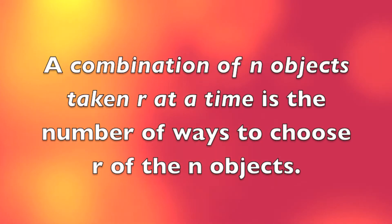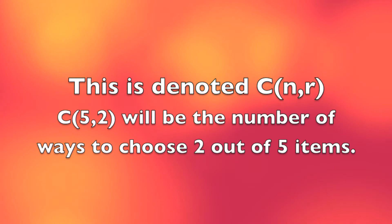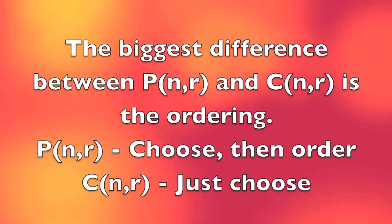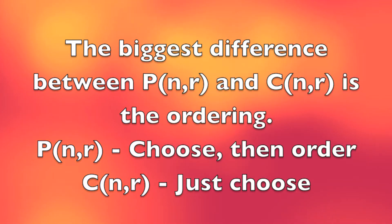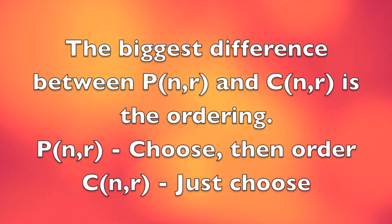A combination is the number of ways to choose a certain number of objects. So C(5,2) is the number of ways to choose two out of a total of five items. The biggest difference between permutations and combinations is that permutations are in order, while combinations don't have to be. For a permutation, we choose our objects and then put them in some sort of order. For a combination, all we have to do is choose.